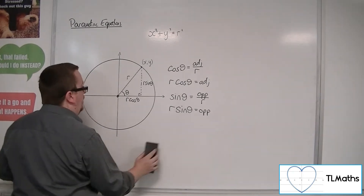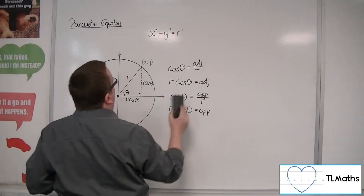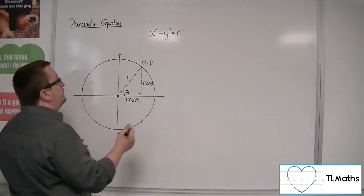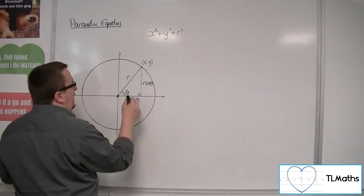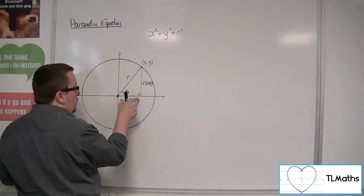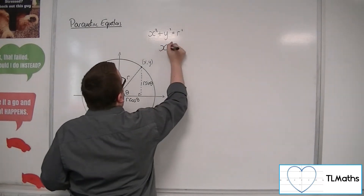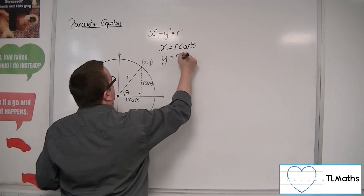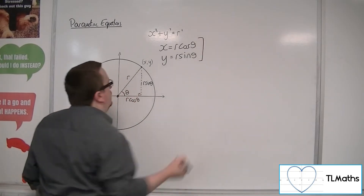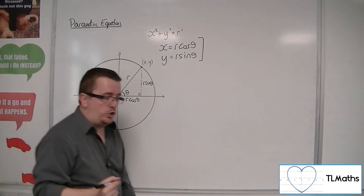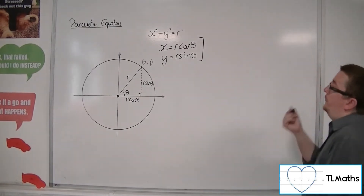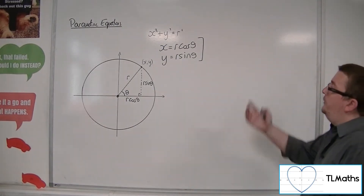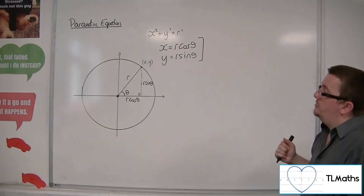Now, because we're happy with the fact that this equation works — that's the equation of our circle — we can then say that x is actually that x-coordinate, which is the distance r cos theta, so x equals r cos theta, and y equals r sin theta. And so, what we have here are a pair of parametric equations that define a circle centred at the origin with radius r.